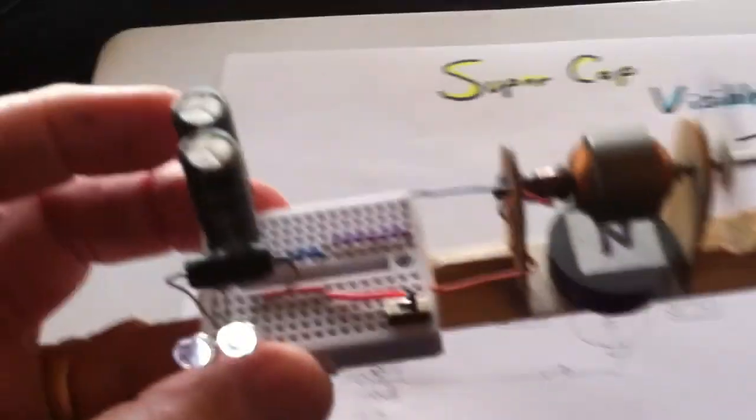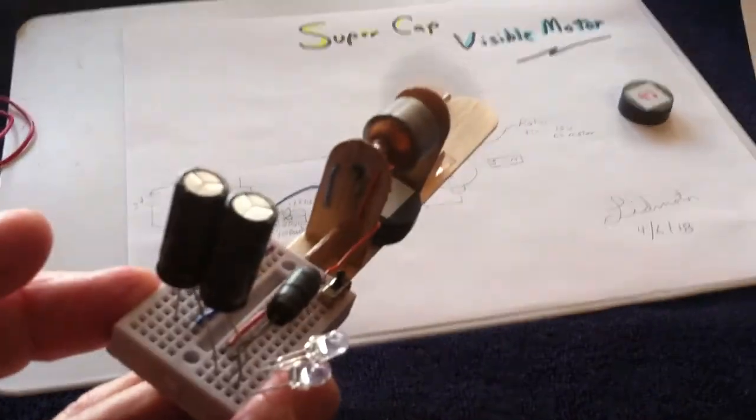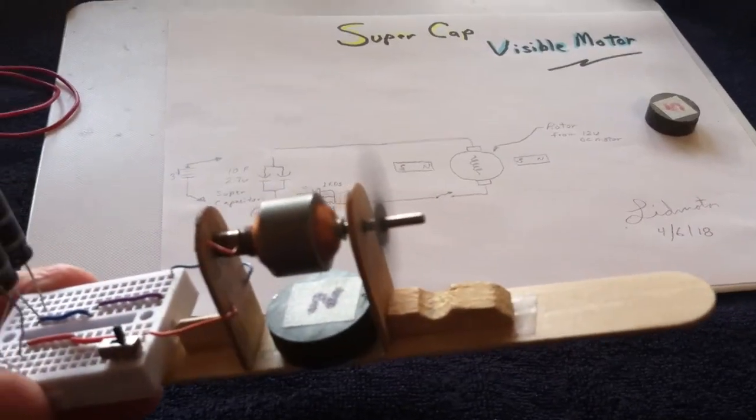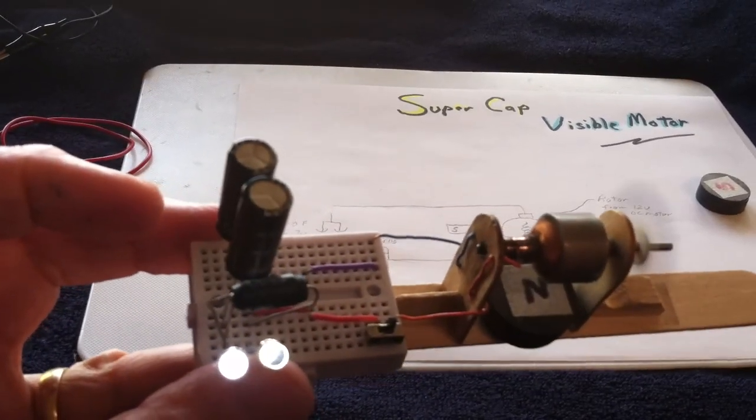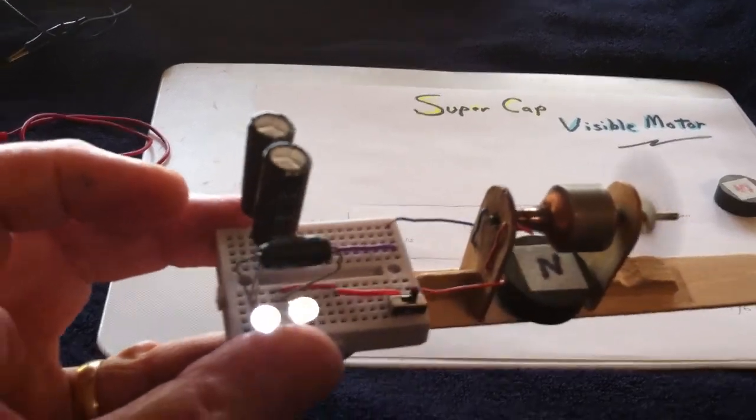That's my little display for today. It's just a regular DC permanent magnet motor running on energy stored in a super cap—a couple of super caps—and some LEDs for the indicator.